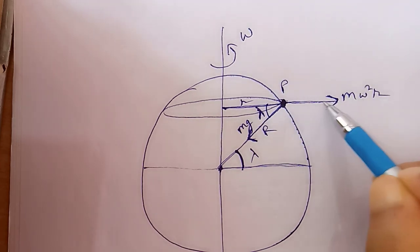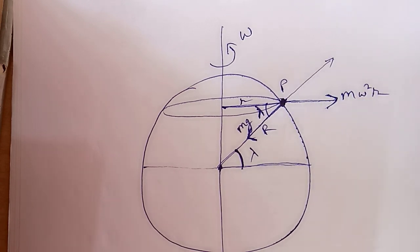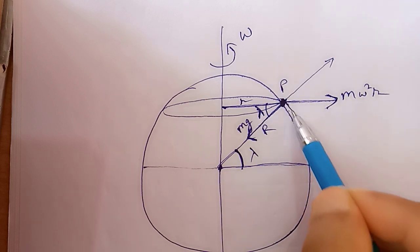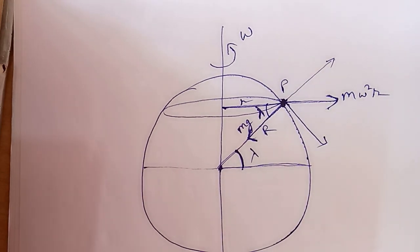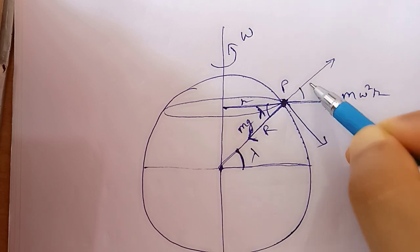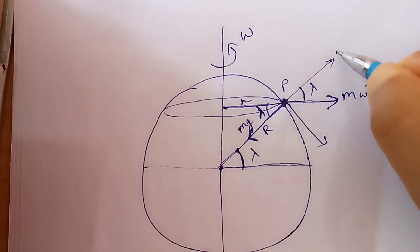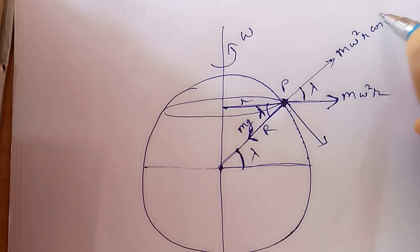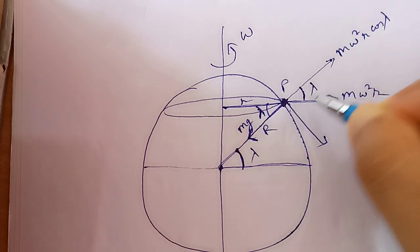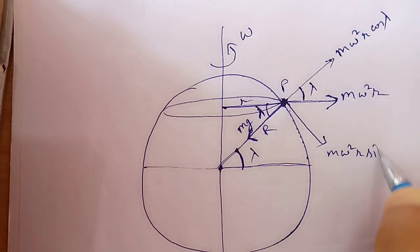We can resolve the centrifugal force mω²r into two components along two mutually perpendicular directions. If this angle is lambda, this angle is also lambda. So one component will be mω²r·cosλ and the other component will be mω²r·sinλ.